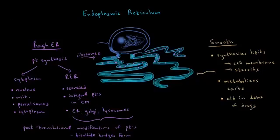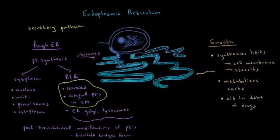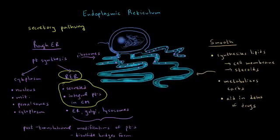Proteins that are secreted from the cell or that become part of the cell membrane follow what we call the secretory pathway. The secretory pathway describes the pathway a protein takes from when it's synthesized until it leaves the cell or becomes part of the cell membrane. All proteins begin to be translated in the cytoplasm, but those that need to follow the secretory pathway have what's called a signal sequence. That signal sequence is detected early on in translation and will cause the polypeptide being synthesized to be pushed into the rough endoplasmic reticulum, where translation is completed.